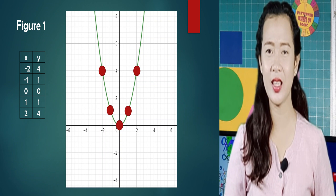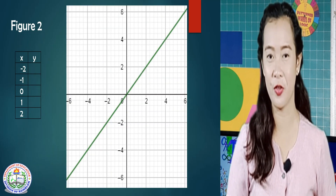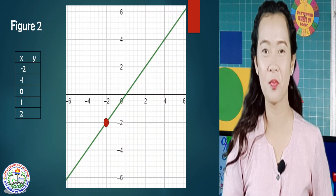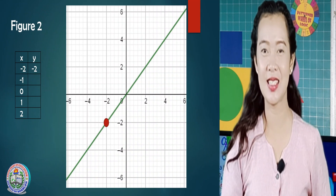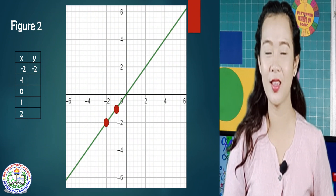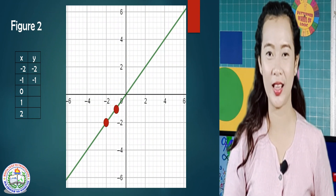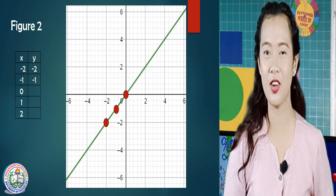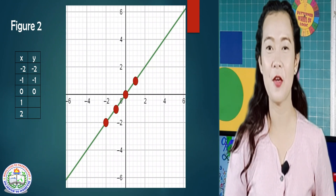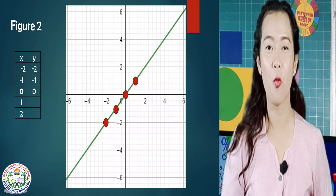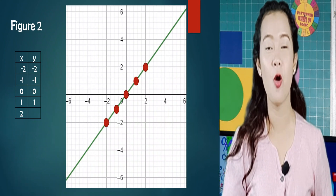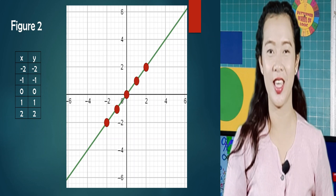Let's study the graph in Figure 2. If x is negative 1, y is negative 2. If x is 0, y is 0. If x is 1, y is 1. And if x is 2, y is 2.